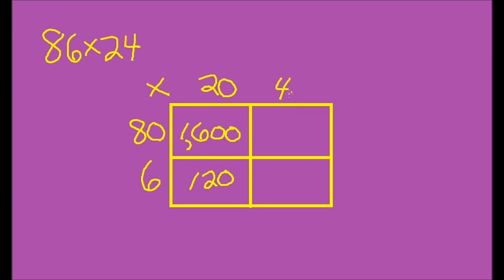Up here I have 80 times 4. 8 times 4 is 32, and I have one zero over here so I add it on. And lastly we have 6 times 4 which is 24.